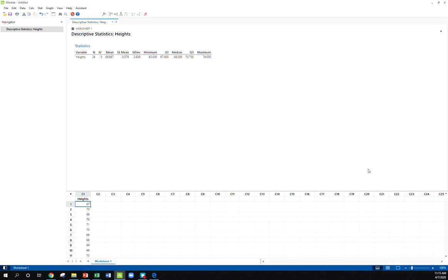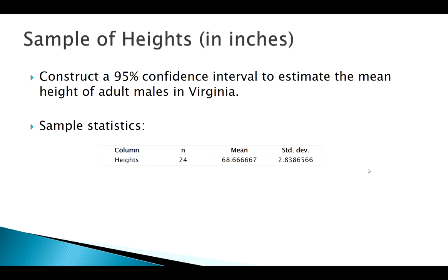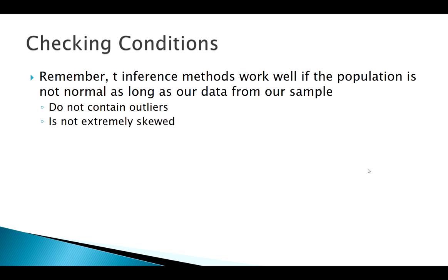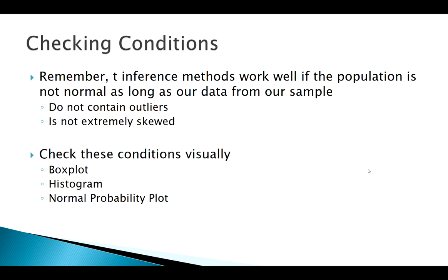Since we're trying to use our t distribution, we need to check some conditions. We don't want to see outliers and we don't want to see really bad skewness. Usually we can check these visually pretty quick and easily. We can use a boxplot to check for outliers, a histogram for the shape of the distribution, and normal probability plots are really good tools for looking at both of these things all in one spot.